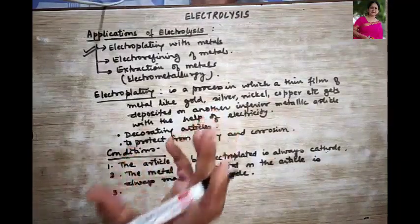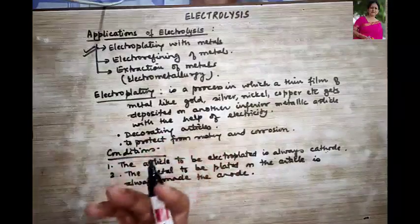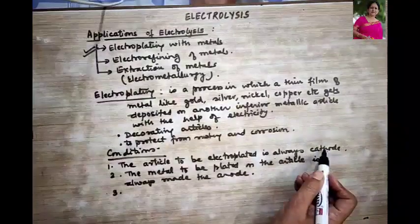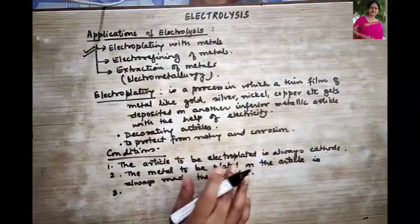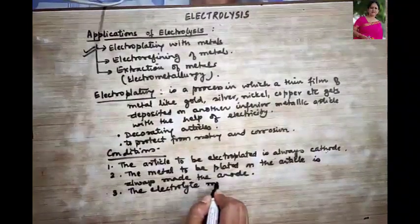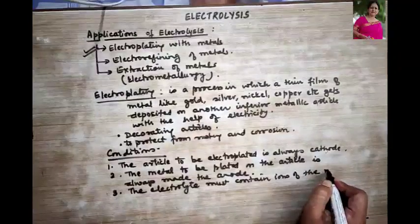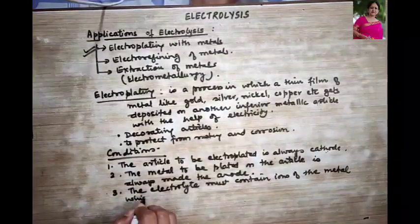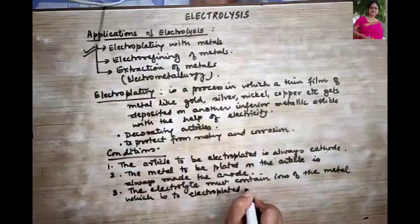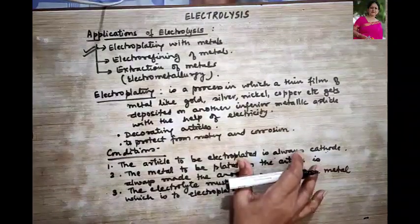Third important point: the electrolyte — the solution in which you dip your cathode and anode, which allows electricity to pass through — should definitely contain the particular metallic ion with which you want to electroplate your article. The electrolyte must contain ions of the metal which is to be electroplated. Why? Because the electrolyte dissociates into ions of the metal, and they migrate towards the cathode where they get neutralised and deposited on your article.